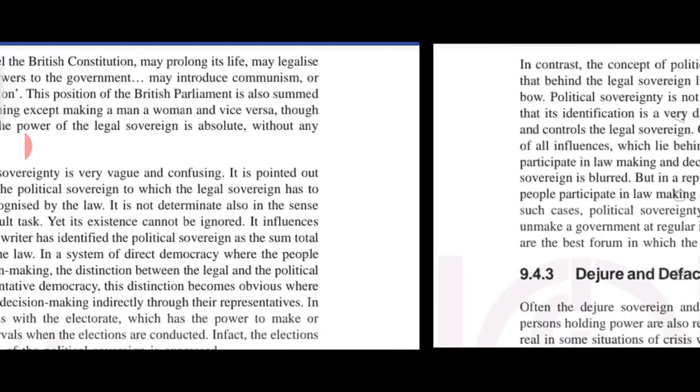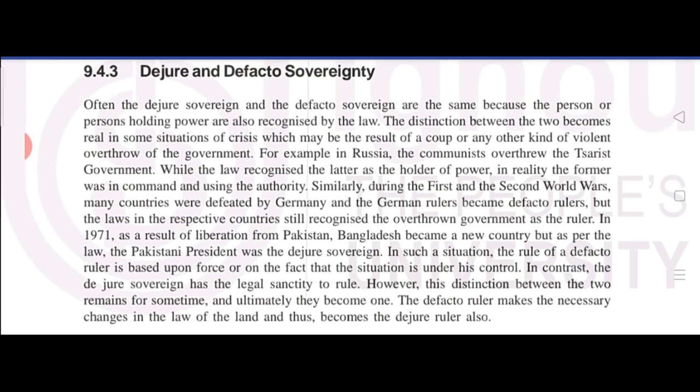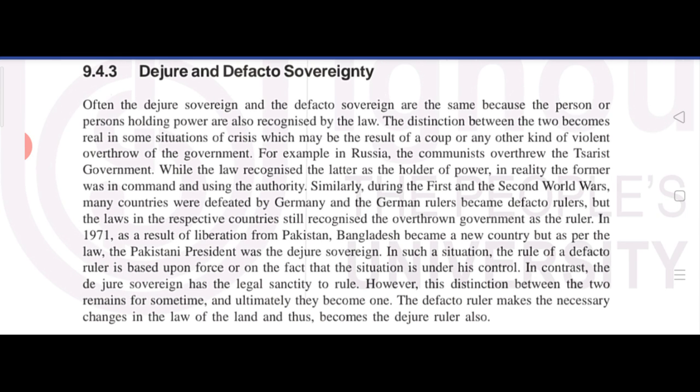Moving forward, the next type is de jure and de facto sovereignty. De jure means legal rights and de facto means real. Often the de jure sovereign and de facto sovereign are the same, because the person holding power is also recognized by the law.